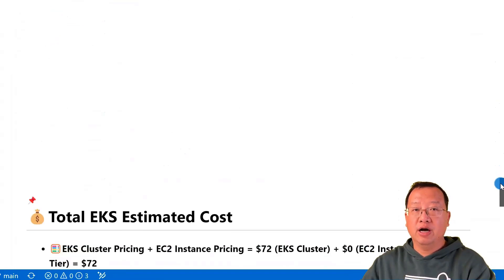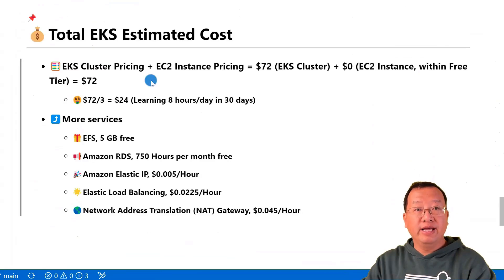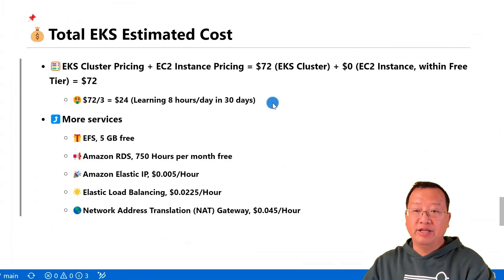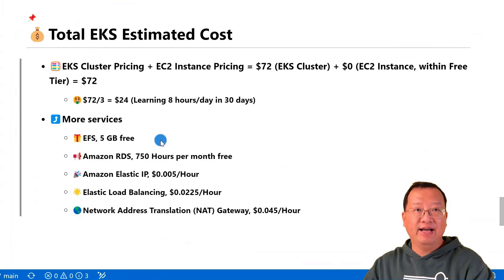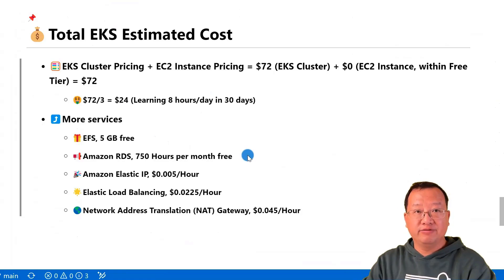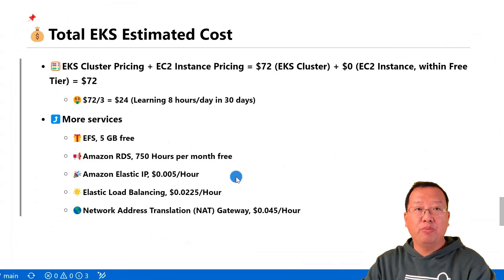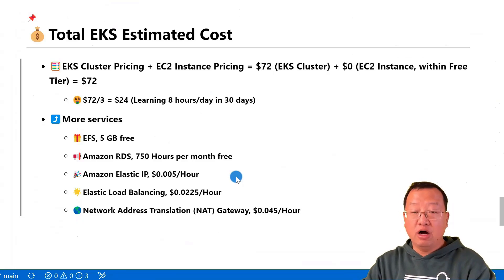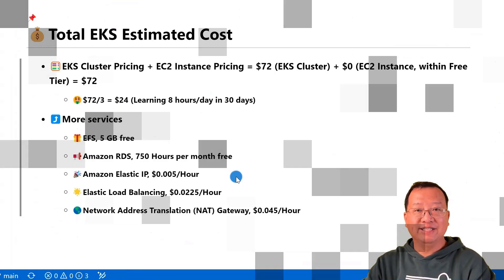Now let's look at the total learning cost per month. When you're learning EKS for eight hours daily, you're looking at a monthly cost of approximately $24 per month. Additionally, you'll get 5 GB of EFS space and 750 hours of RDS service for free. However, when you go deeper — such as learning ELB with a private subnet in EKS — you'll have to pay more. This is all for today's video. We quickly learned how to spend around $24 per month to learn EKS. Thank you for watching, and see you next time.